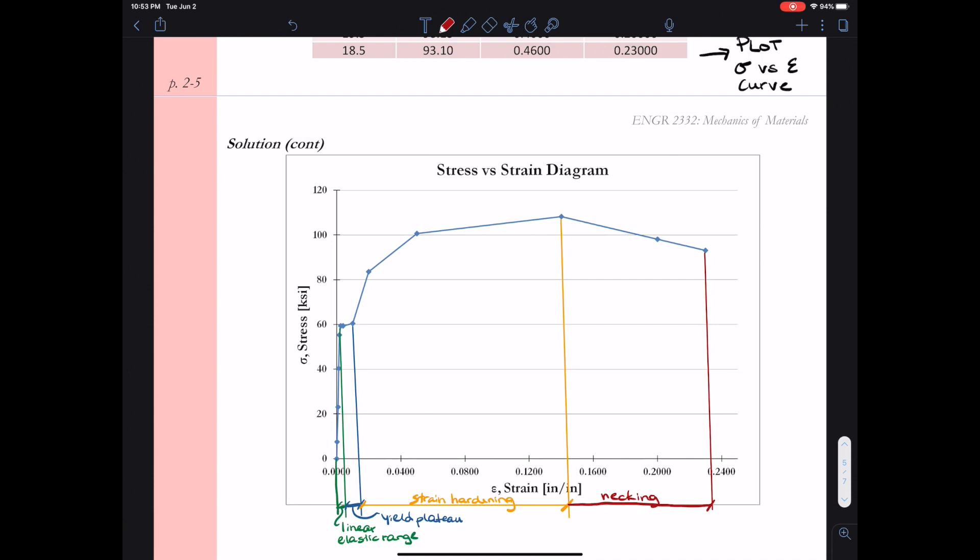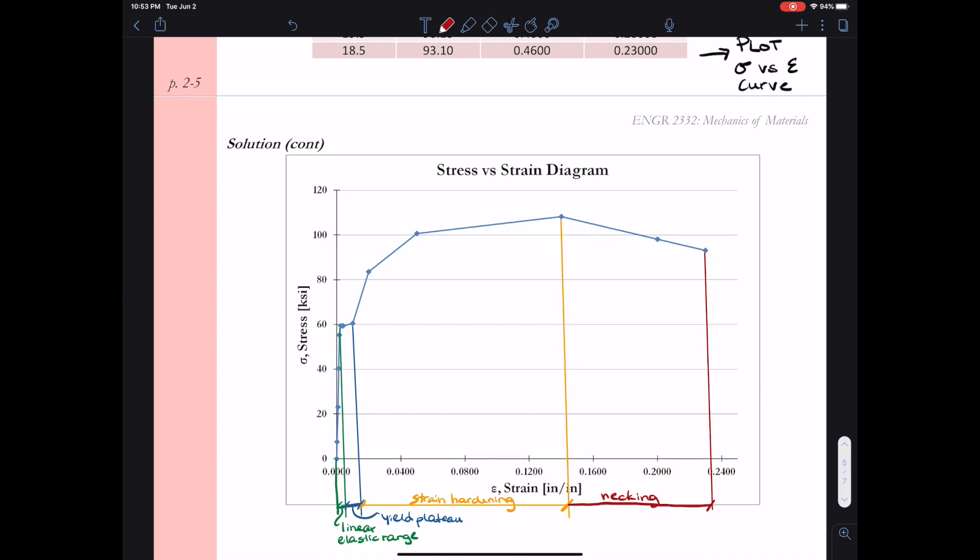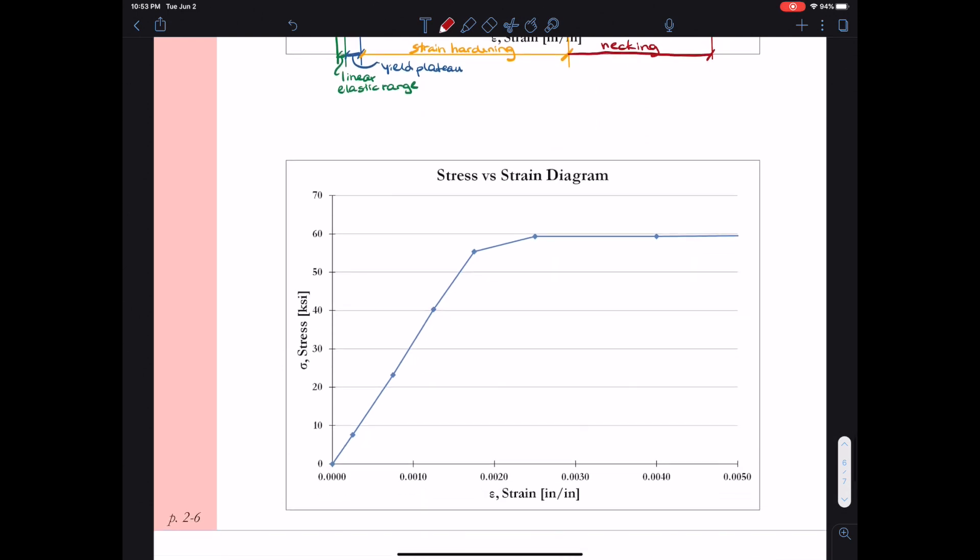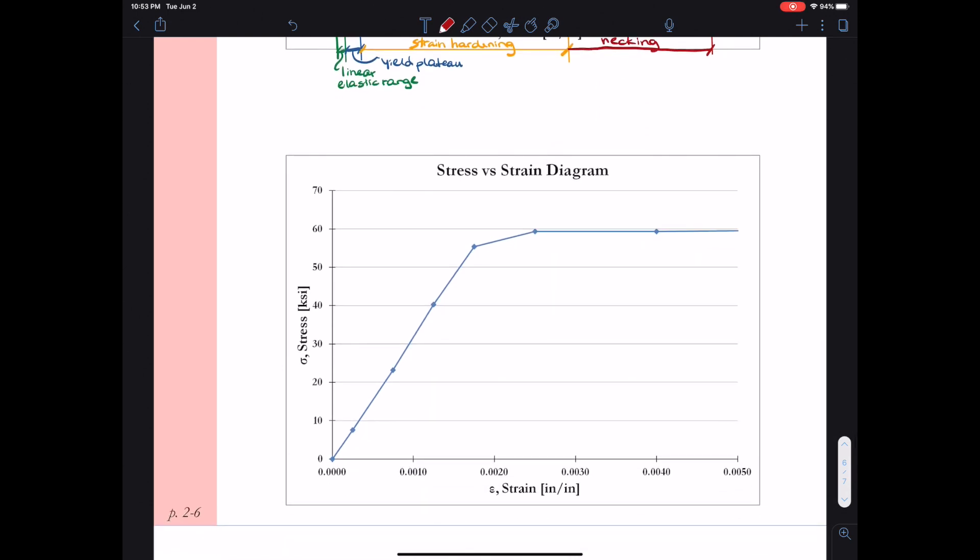Next, we're asked to calculate the approximate value for the modulus of elasticity. So for this, I want to focus on just that linear elastic range, that beginning portion of the curve. So I've taken the same data, but I've drawn it at a different scale so that I only include the first like seven or eight data points. So here, I can more clearly see the linear elastic range. And the linear elastic range, the modulus of elasticity, is the slope in that linear elastic region.